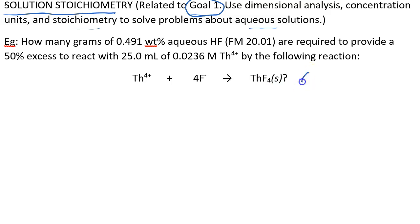That method we talked about is called gravimetric analysis. What we're looking for is how many grams of this HF solution, and we know the concentration is 0.491 weight percent. We're combining it with 0.0236 molar thorium-4, and we have 25 mL of this thorium-4 solution.